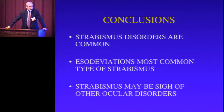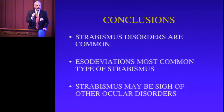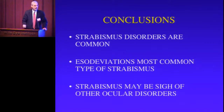In conclusion, strabismus disorders are one of the most common problems we see in pediatric ophthalmology. Esodevations are a little more common than exodeviations. It's very important to realize that sometimes strabismus — an eye deviating — is a sign that maybe there's poor vision in that eye, and maybe it's poor vision because the second most common presentation of retinoblastoma is strabismus. If you think there passively is some strabismus, then that child should be seen. Thank you very much.